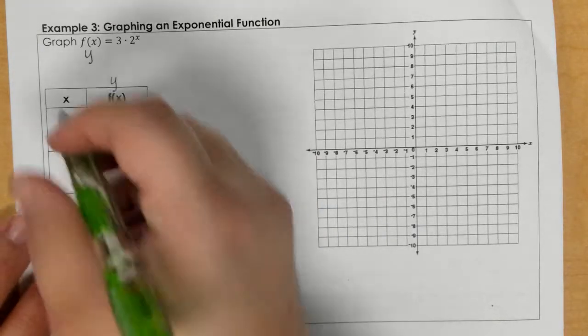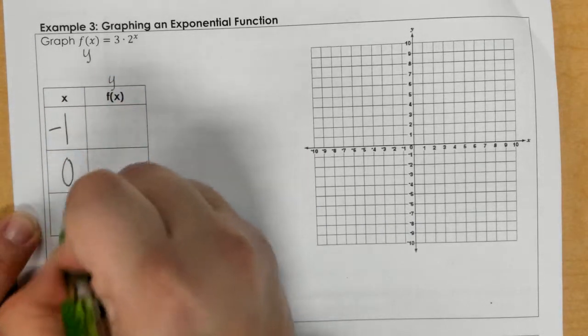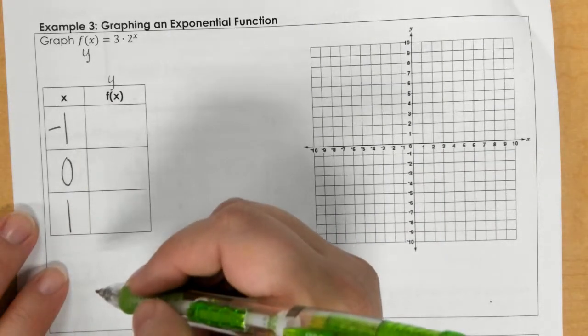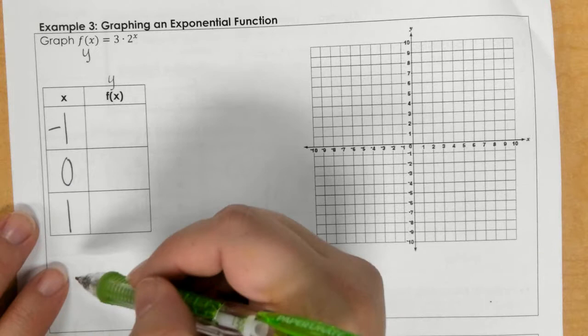For x's, we're going to always use negative 1, 0, 1. I call it the LOL, but it has a negative in front. So negative 1, 0, 1.